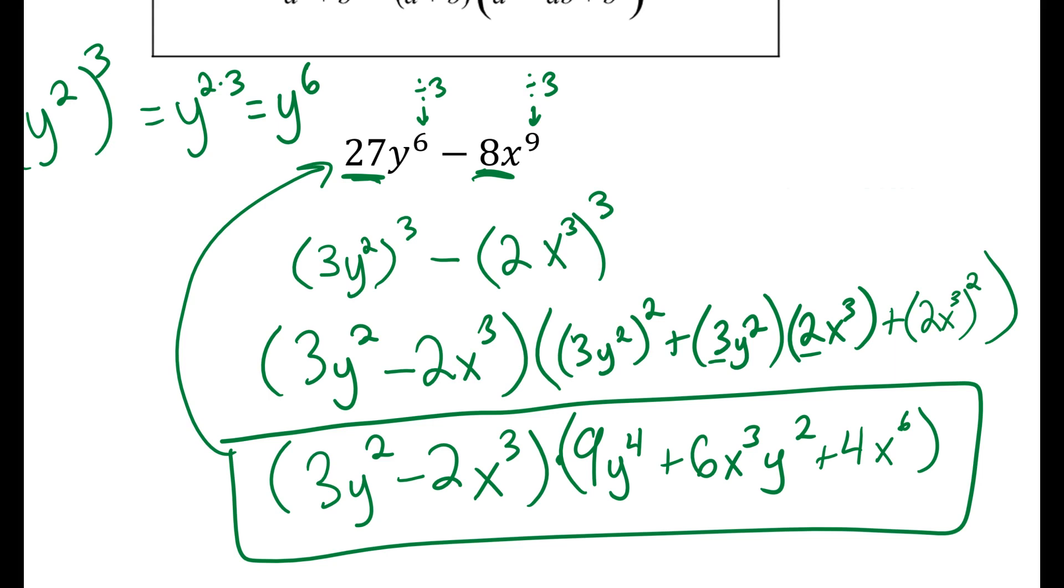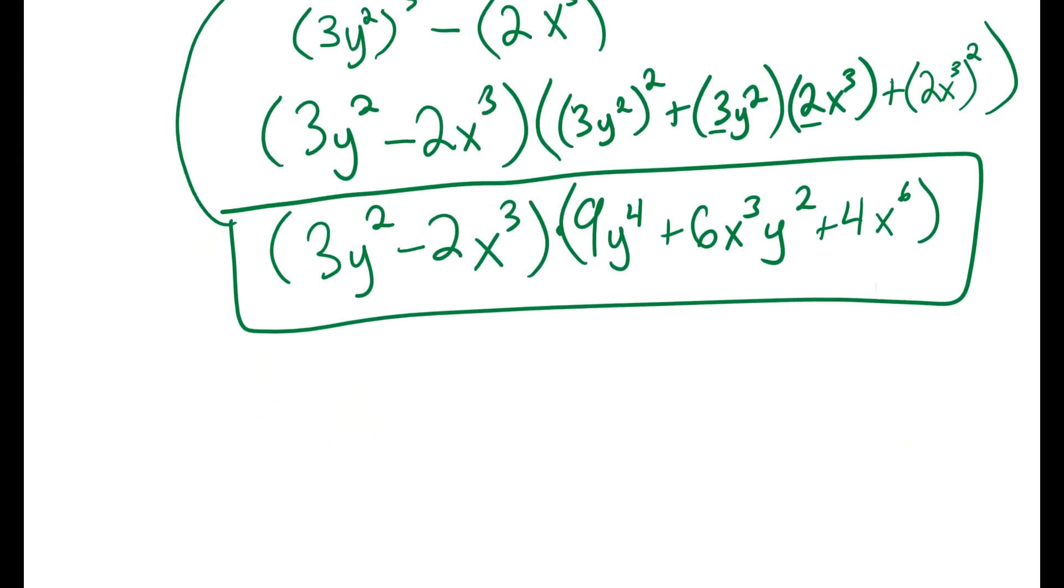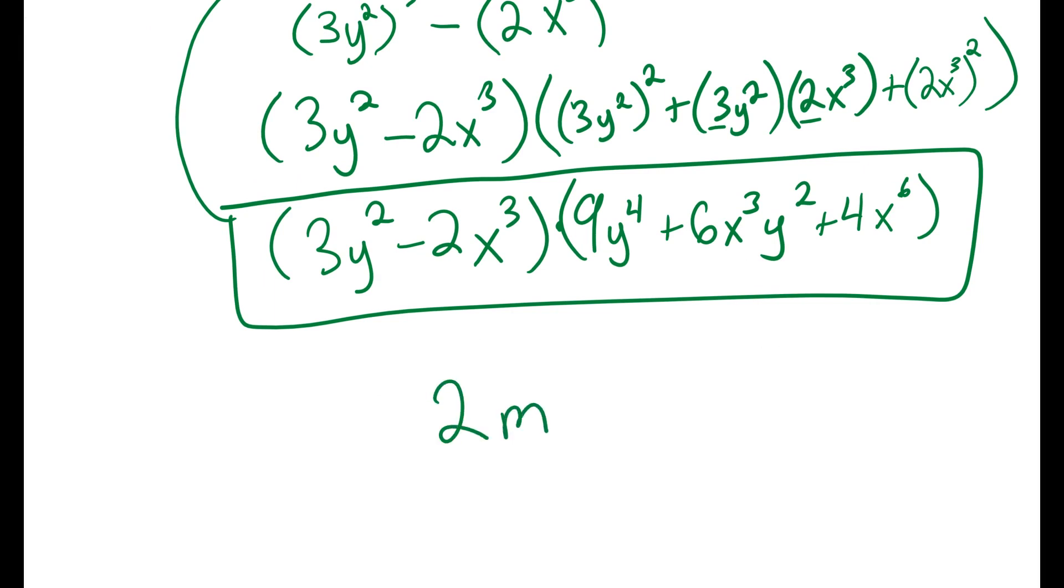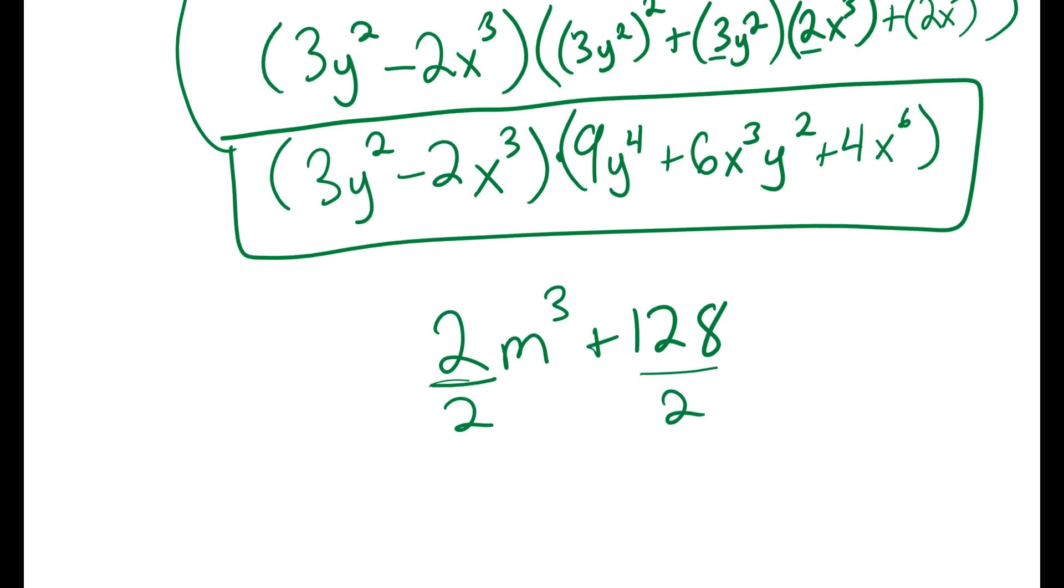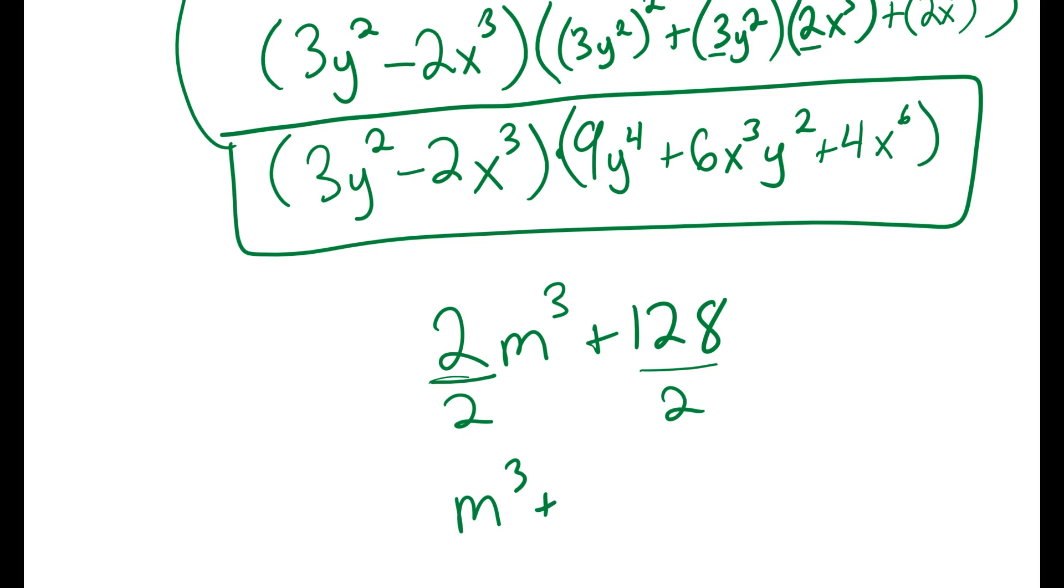One word of advice: be careful with these problems, as they don't always look like sums or differences of cubes to start off with. Take this example, 2m³ plus 128. Neither 2 nor 128 is a perfect cube. However, if you take out that GCF of 2 first, you'd end up with m³ plus 64. And I know that m cubed is a perfect cube, and 64 is a perfect cube. So there might be a GCF you need to factor out first before you can realize it's a sum or difference of cubes.